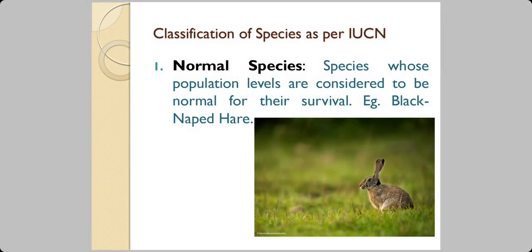The IUCN classifications: Normal species are those whose population levels are considered normal for their survival. Examples include cattle, dogs, and rodents. Any species that is abundant qualifies as a normal species.